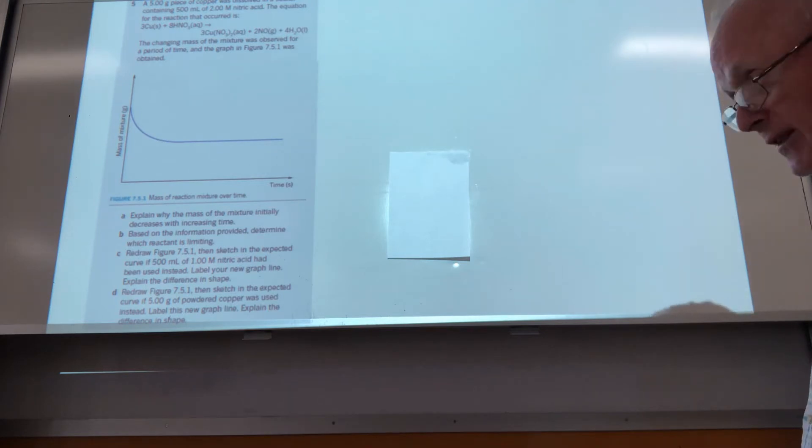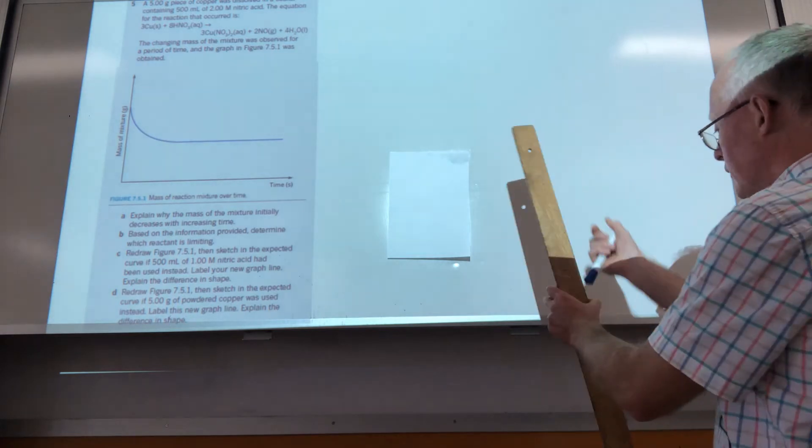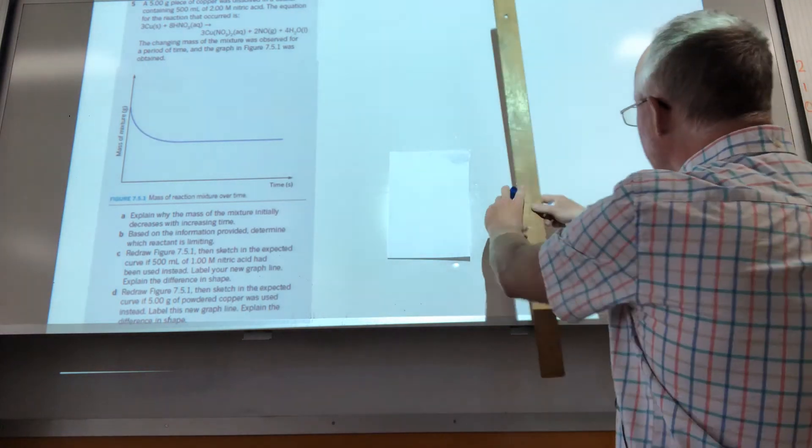A very quick inspection tells us that nitric acid is still well and truly in excess when we've used the lower concentration, so that's nothing we have to worry about. All we need to show is the lower rate of reaction. So when we draw a graph we need to use a ruler, of course rulers are important.